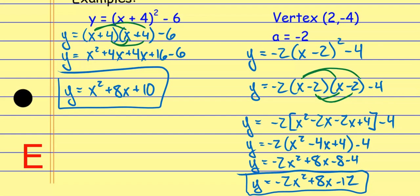Vertex form is the gateway here — just like when we wrote linear equations, we typically started with point-slope form, then rearranged to slope-intercept, and then to standard form. We're doing the same thing here. Vertex form is the easiest one to write, and then we can expand out from there.